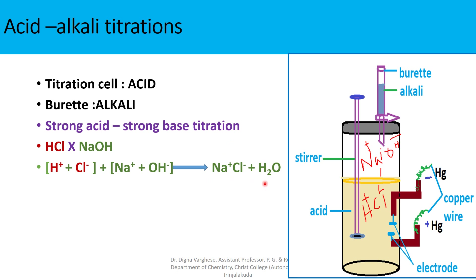It is a neutralization reaction when alkali is added to the acid-containing titration cell. The H+ ion is replaced by Na+ ions, forming NaCl instead of HCl after addition of NaOH. Since the H+ ion has high mobility compared to Na+ ions, the conductance decreases gradually until the equivalence point is reached.